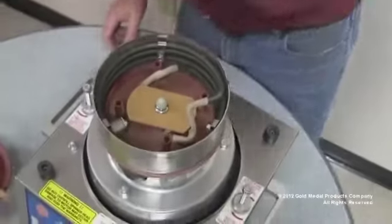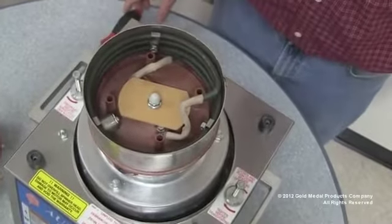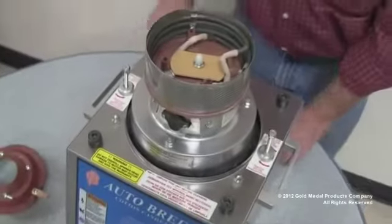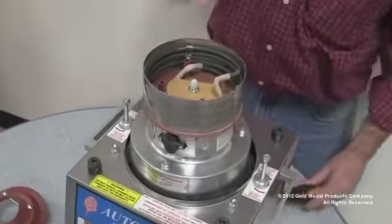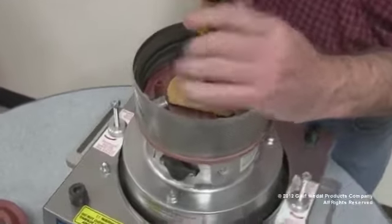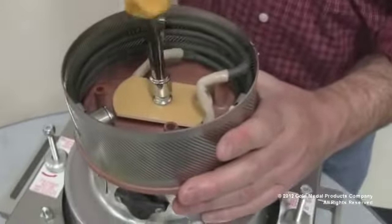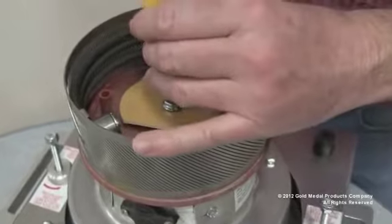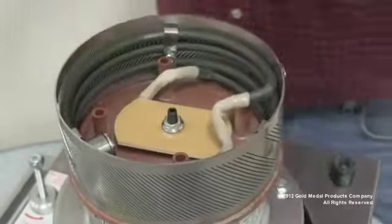Next step is to remove the plastic acorn nut. Sometimes, after a machine has been in use, the acorn nut, the adjacent metal nut, and the jack screw will come out as one assembly. This is fine. Save these parts for reinstallation later.